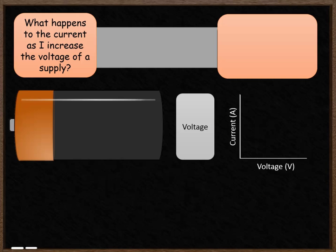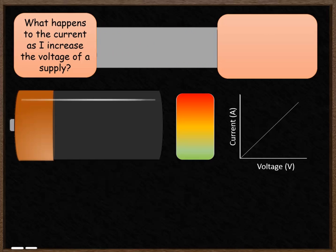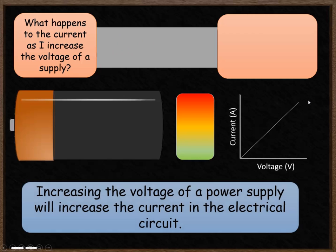Voltage and current are related. What happens to the current as I increase the voltage of a supply? As I increase the voltage of my battery, what's going to happen to the current flowing through the wire in the circuit? So as the voltage increases, notice that the amount of current also increases — those two things are definitely related. Increasing the voltage of a power supply will increase the current in the electrical circuit.